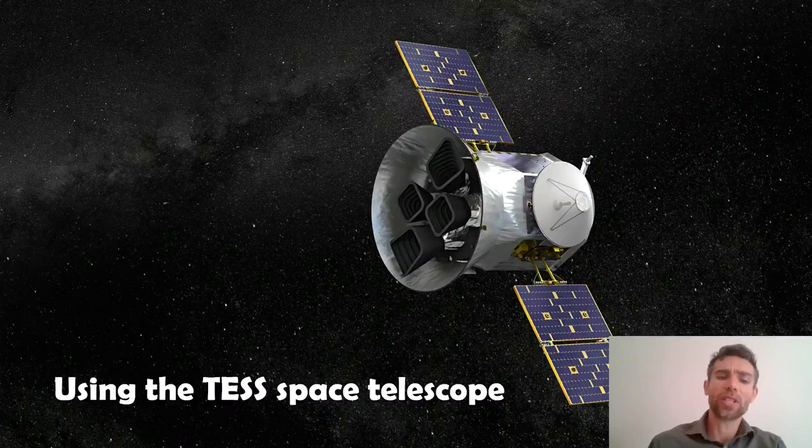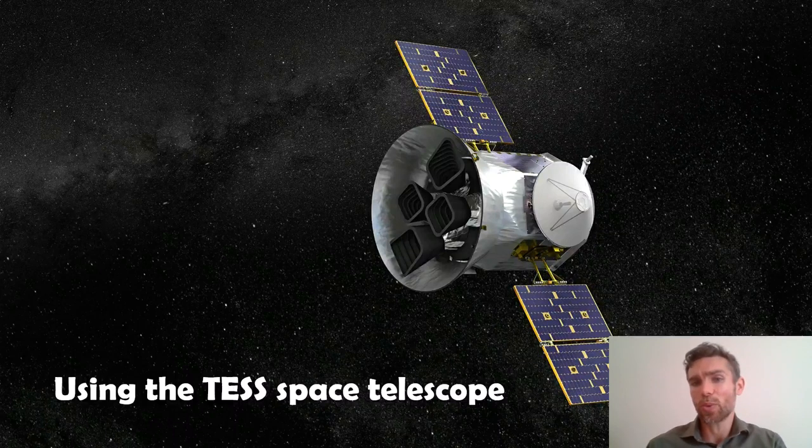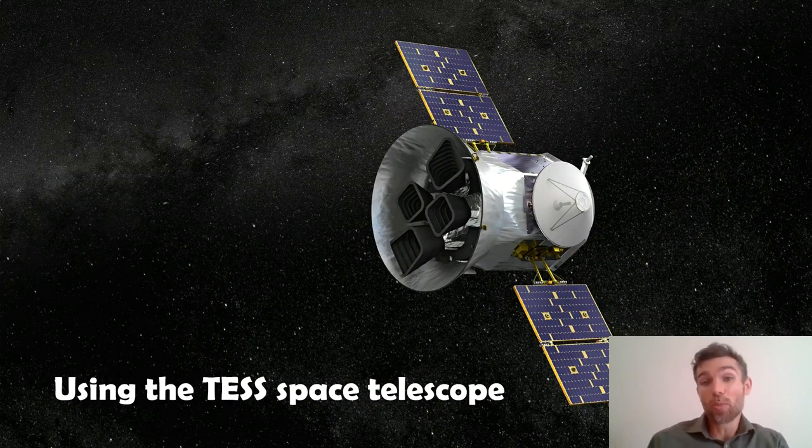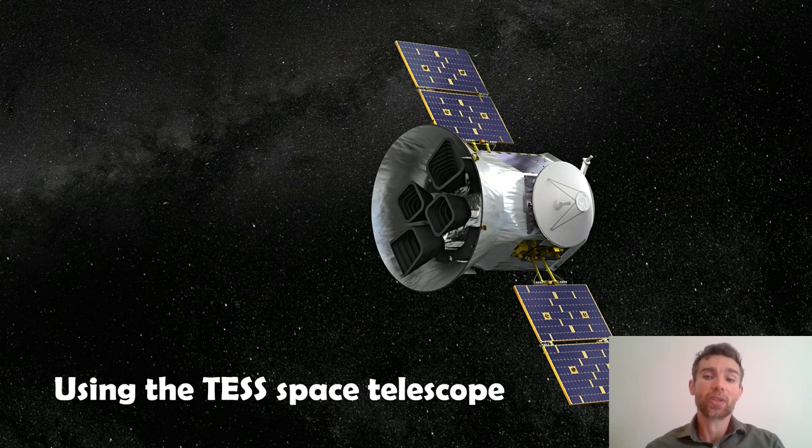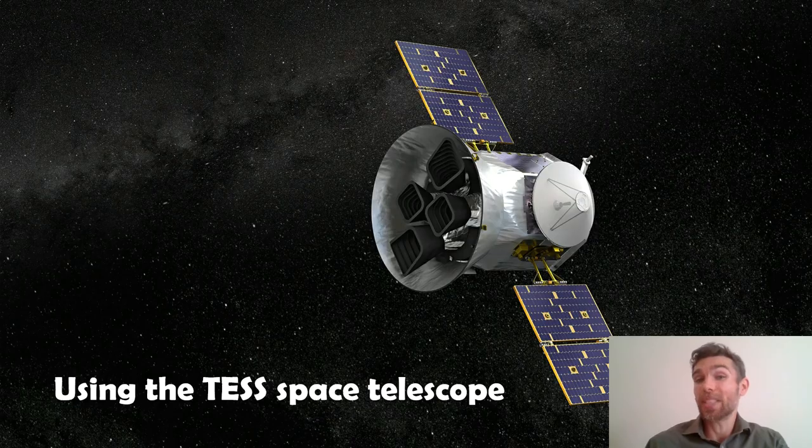This was using the TESS space telescope which is designed to look for new planets, looking at lots of stars all at the same time. We're looking for dips in brightness of the star as a planet passes in front of it. As it passes in front it blocks light out, we can then detect the planet.